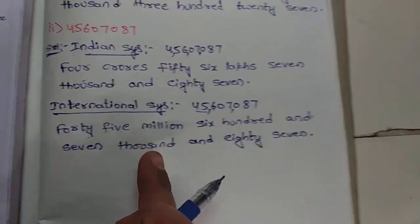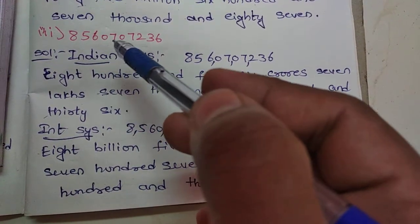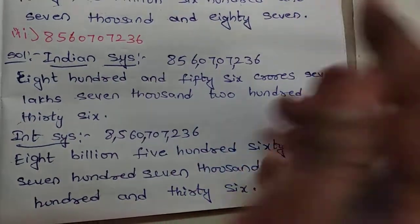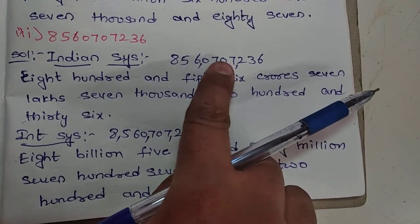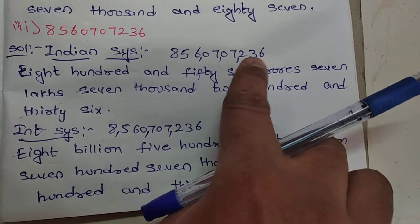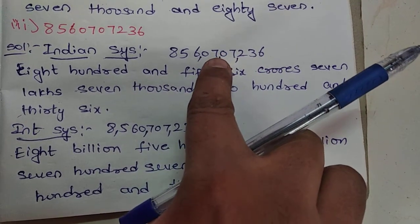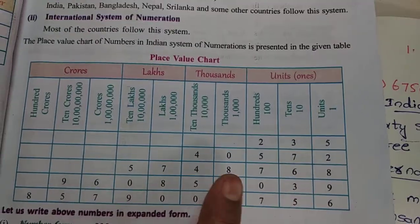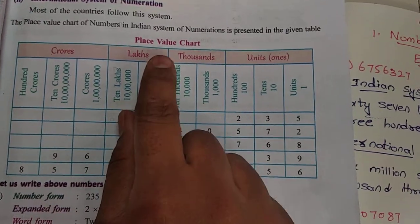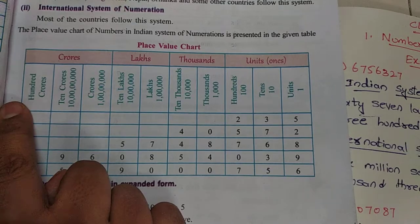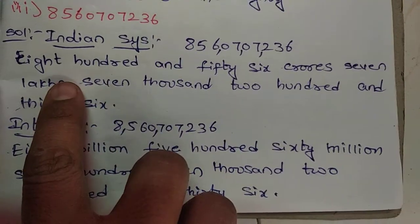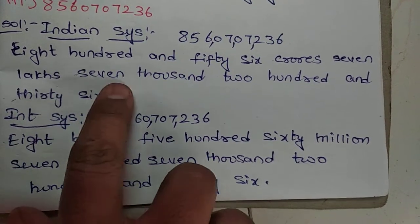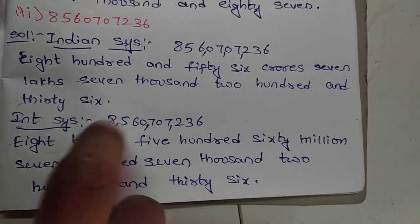Third number: 8,560,707,236. In the Indian system, start from the right side — three places, then two, two places. Place values: units, tens, hundreds, thousands, ten thousands, lakhs, ten lakhs, crores, ten crores, hundred crores. In the Indian system, after crores come ten crores, hundred crores, thousand crores. The word form is: eight hundred and fifty-six crores, seven lakhs, seven thousand, two hundred and thirty-six.